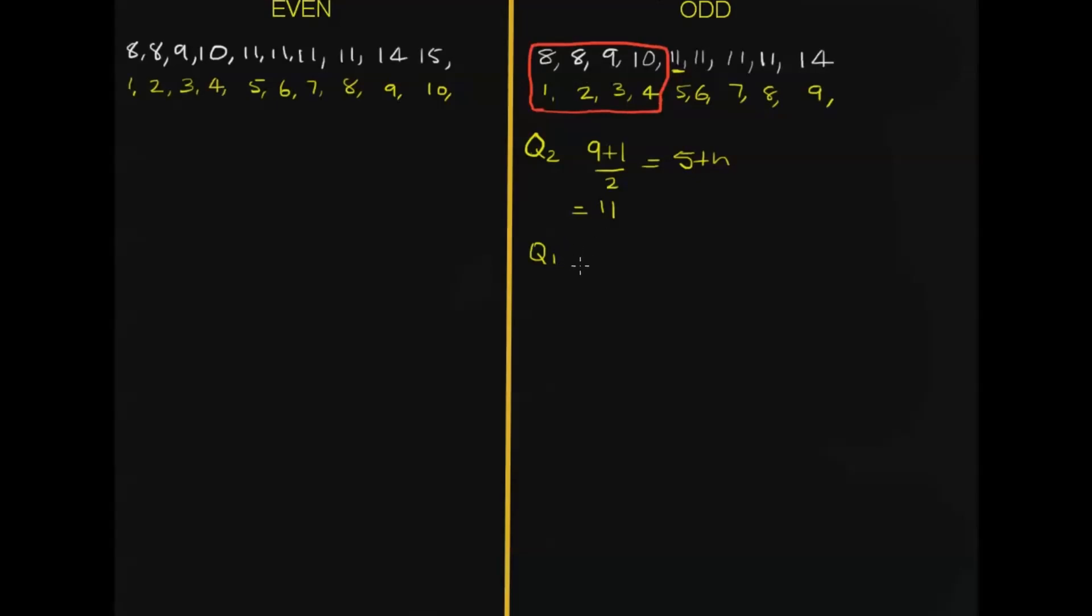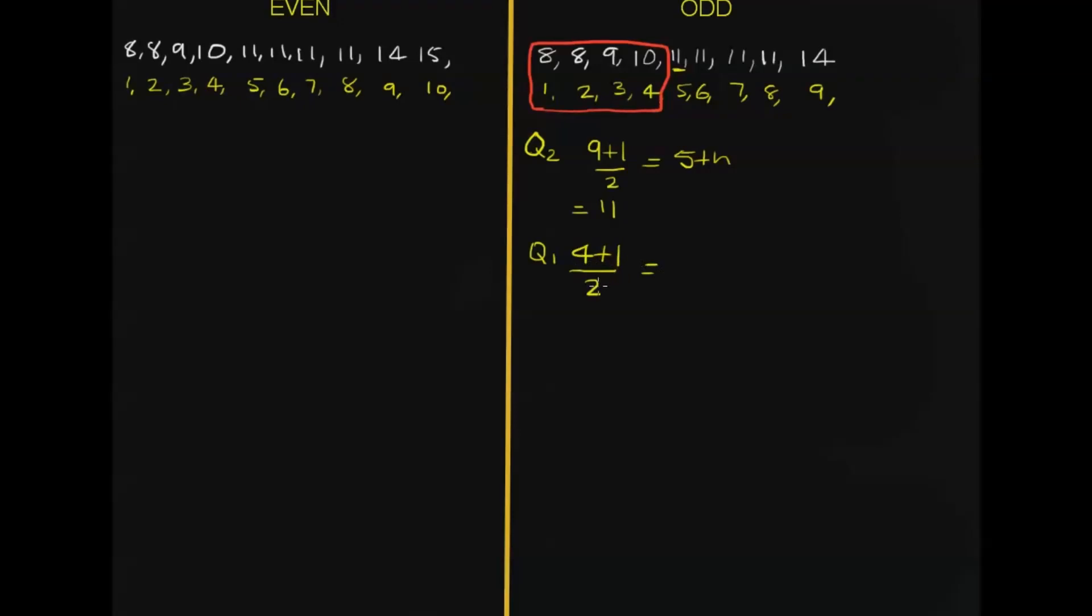So what we do is the same thing. We say 4, because there's 4 of them, plus 1 divided by 2. And that's going to come out to be 4 plus 1 is 5, 5 divided by 2 is 2.5. So we're looking for the 2.5 score. Well we don't have 2.5, we've got a 2 and a 3.